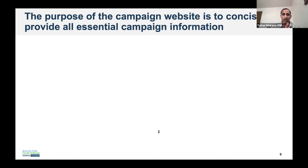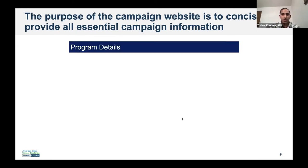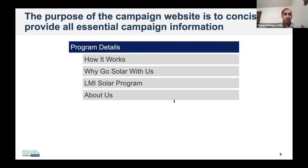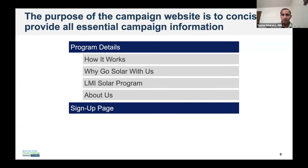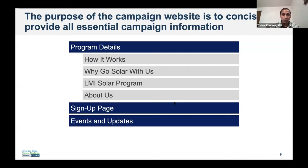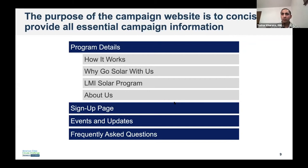The purpose of the campaign webpage is to provide all the essential campaign information. In our sample content, we've split this up into the following sections: program details — including how the campaign works, reasons to go solar, LMI-specific solar offerings, and information about the partner organizations. Another key part of the website is a signup section or page — this is very important to show prominently because this is how participants are going to sign up for the program. You also want the website to show events and updates.